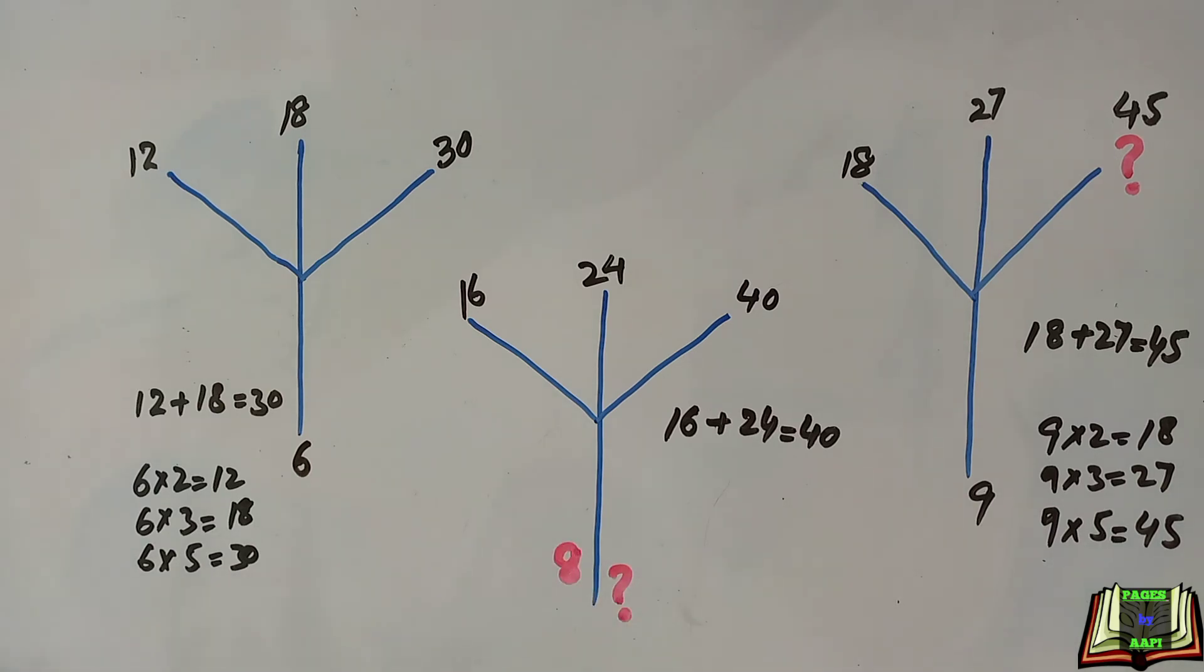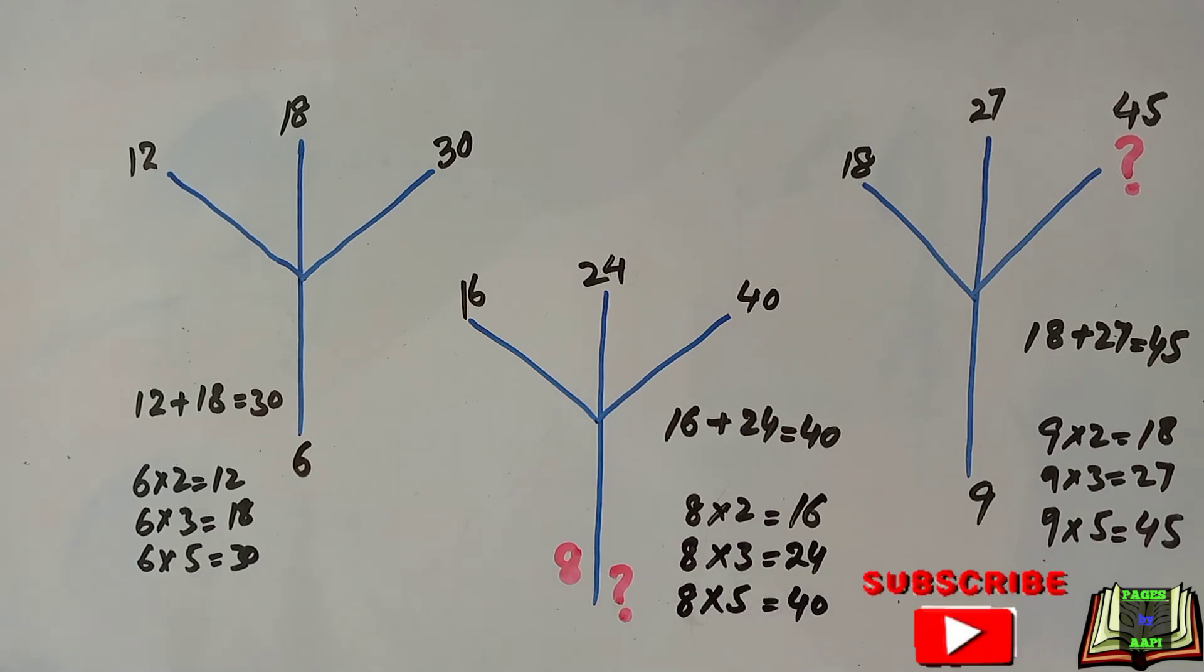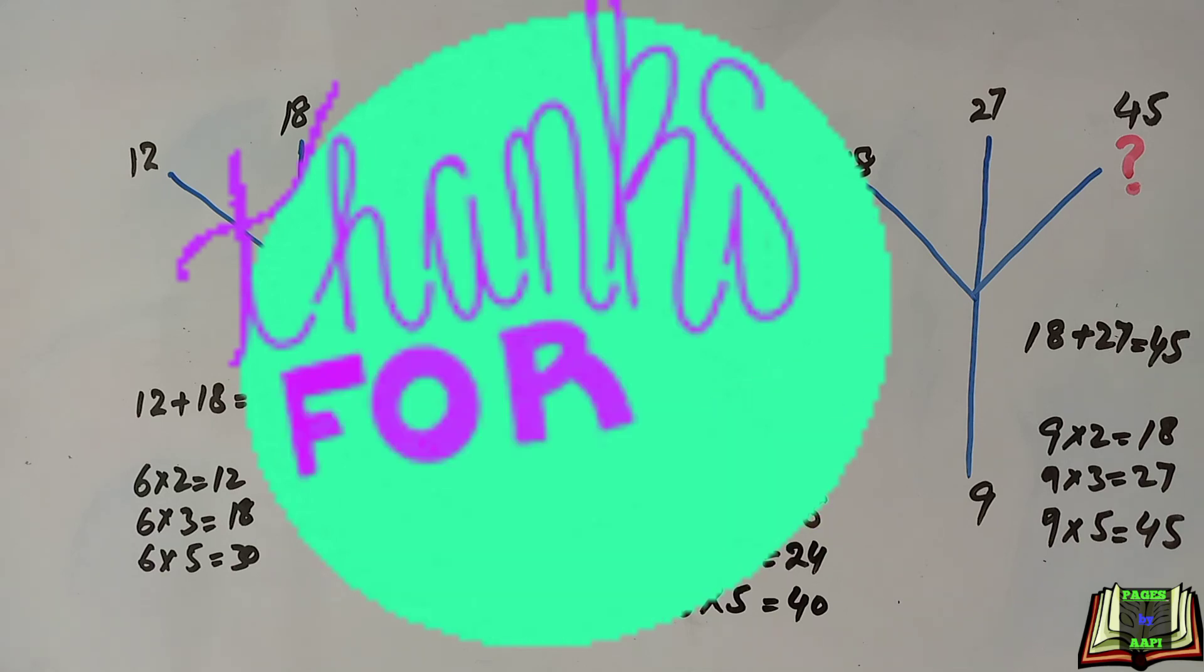We can write the multiples of number eight: eight twos are 16, eight threes are 24, and eight fives are 40. I hope you like this solution. If you do, please hit the like button and share it with your friends.